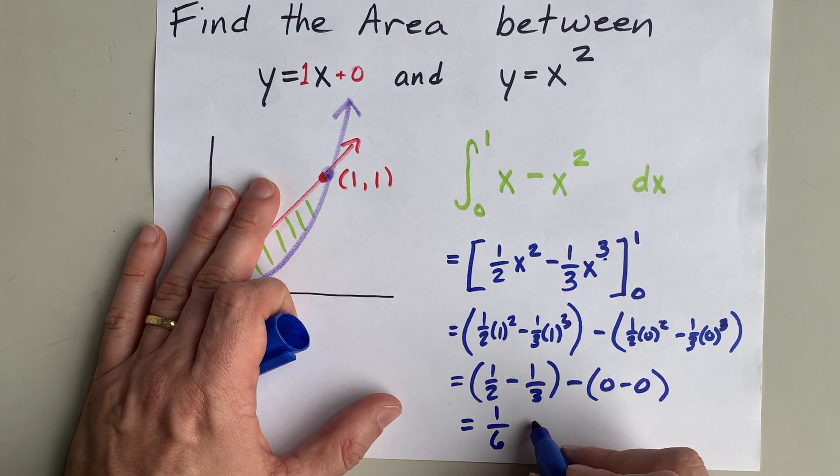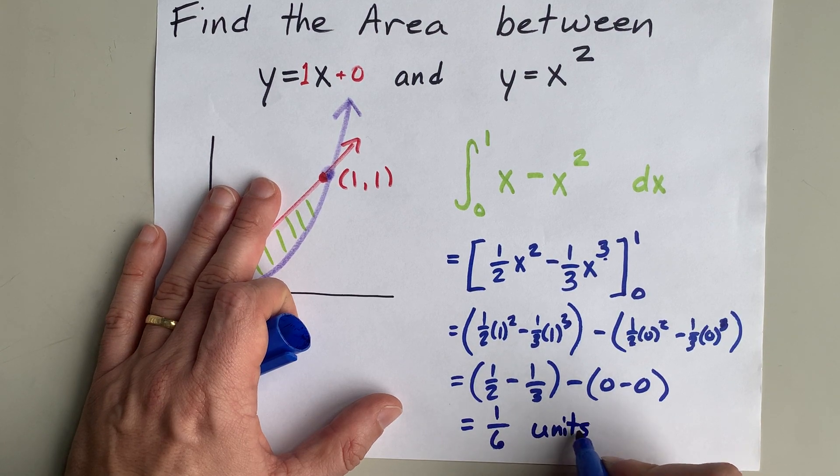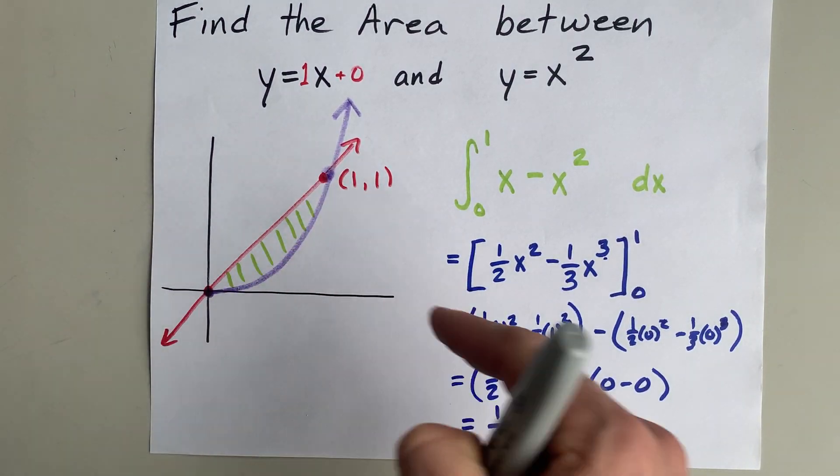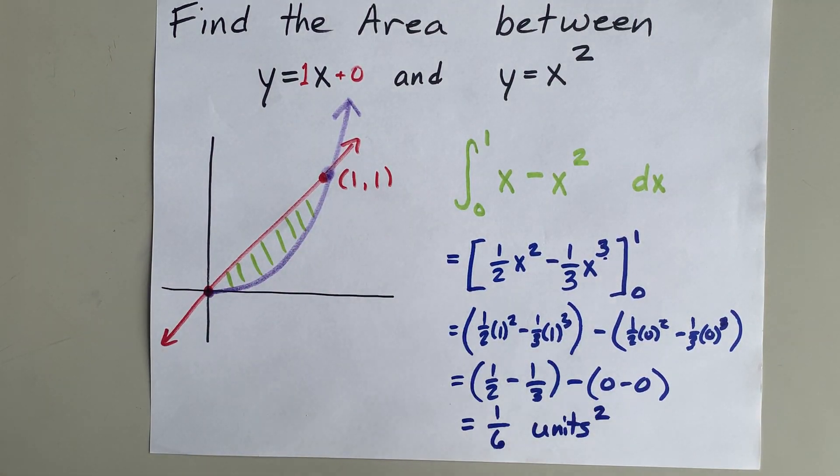Now, the units here, I'm just going to call them units, and because it's area, it's going to be units squared. But apparently, the area between these two curves is a sixth of a square unit.